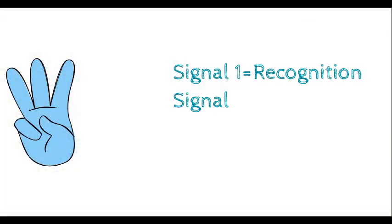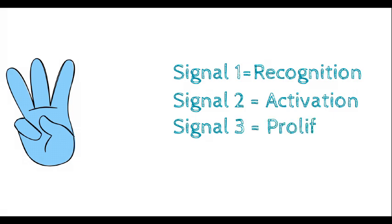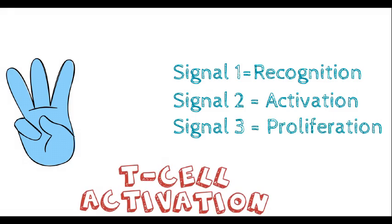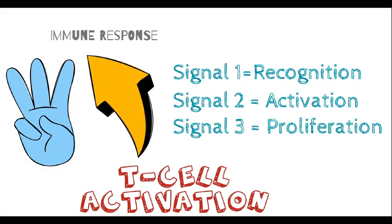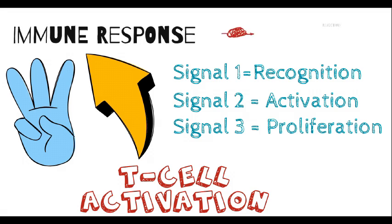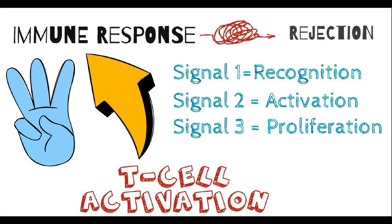Today, we're going to explore the three critical signals in the immune response: signal 1, signal 2, and signal 3. These signals play a critical role in activating T-cells and directing the immune response. In the context of transplant immunology, they serve as key triggers for rejection. Let's break it down step by step.